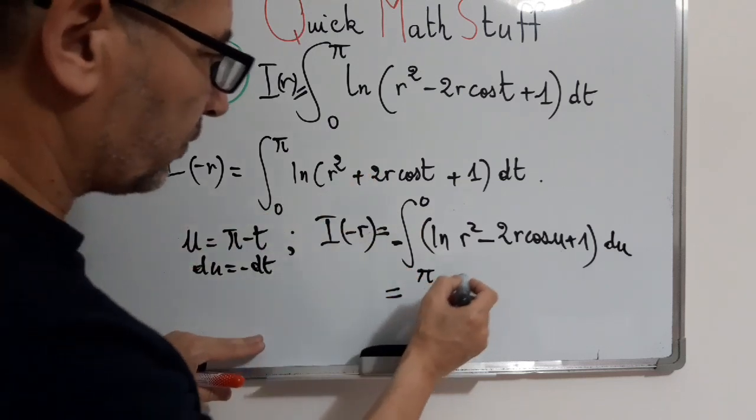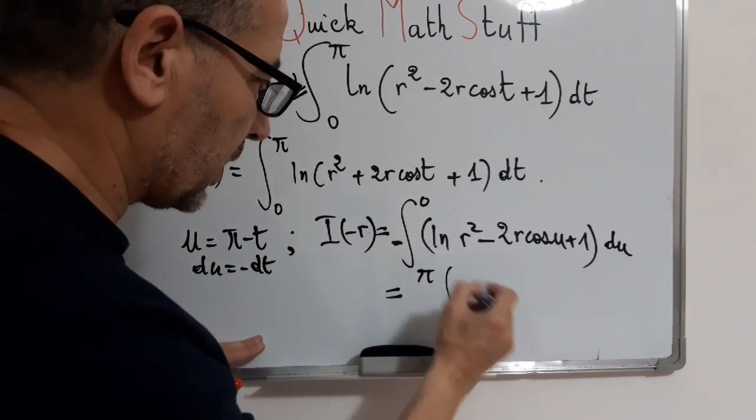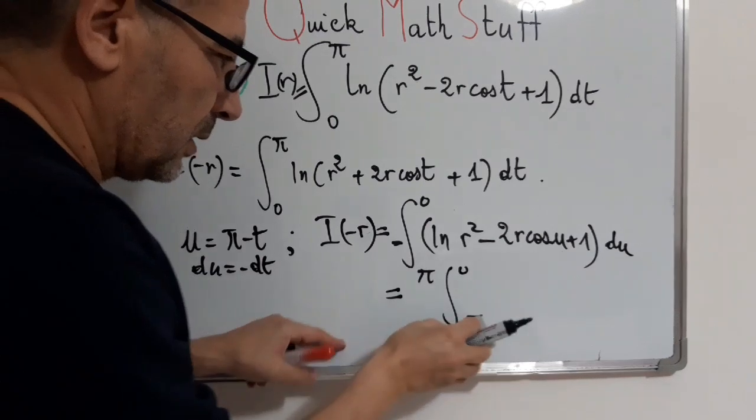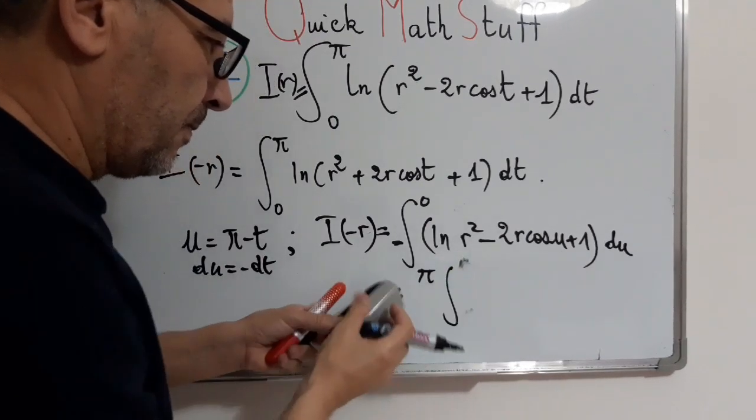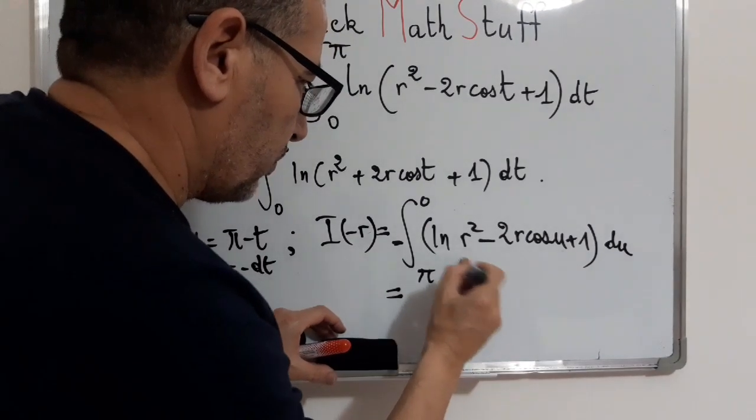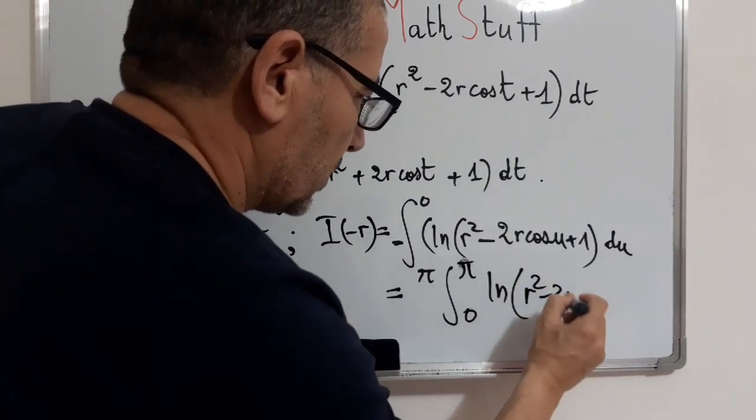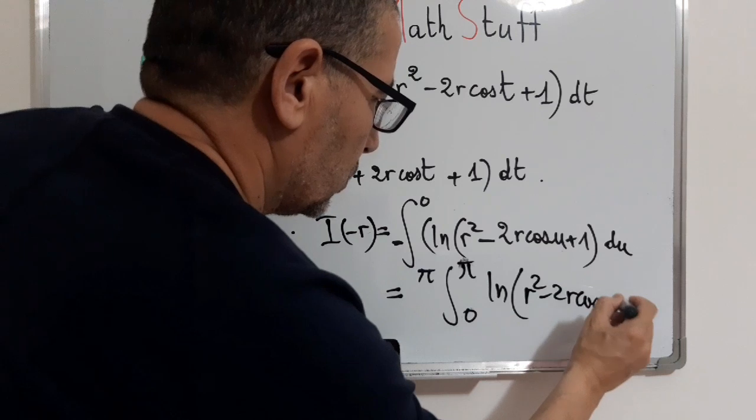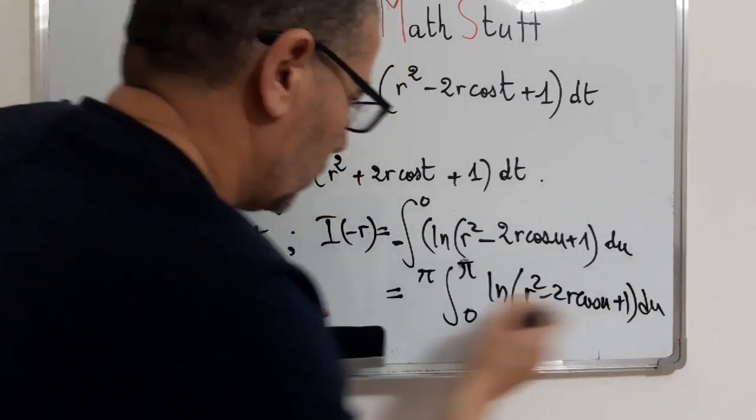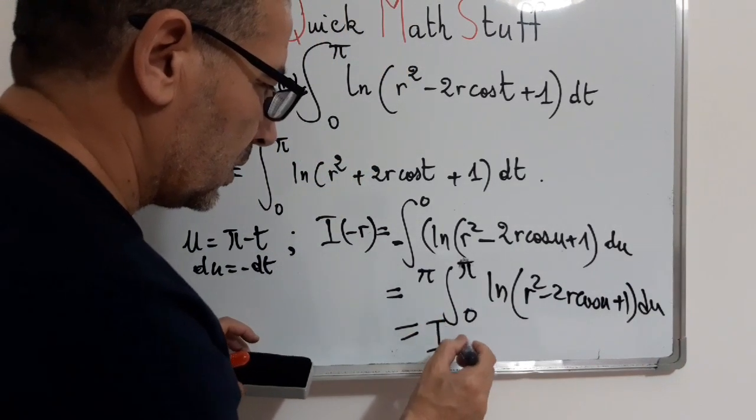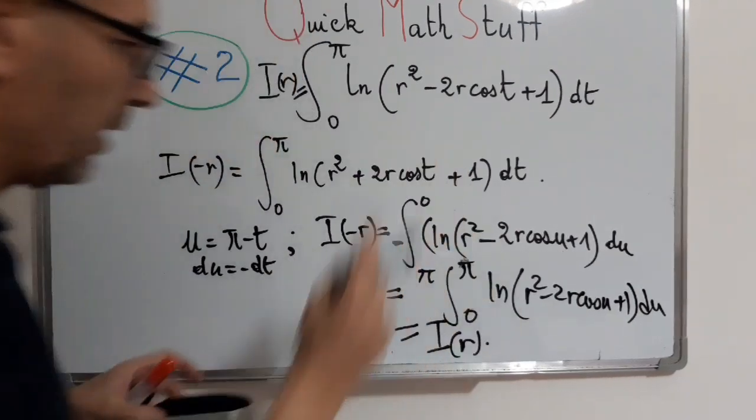So in the end we found that this equals integral from 0 to π of ln of r squared minus 2r cosine u plus 1 du, which exactly equals I of r.